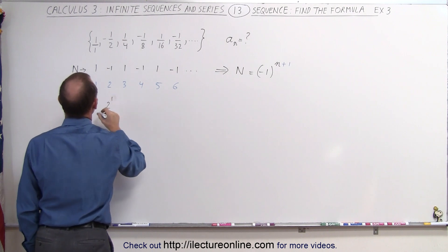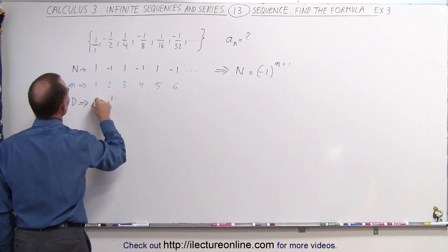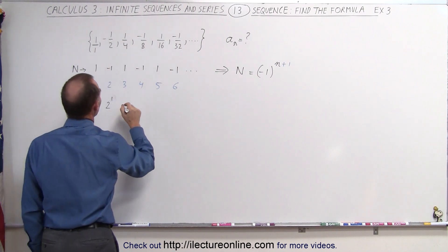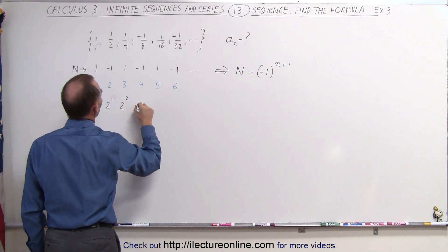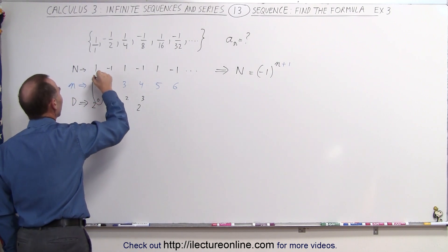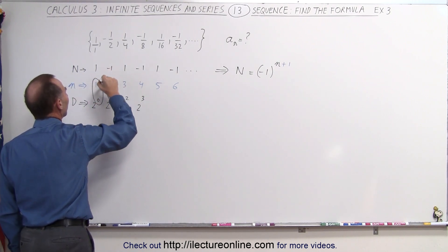That would be two to the first power. Notice that this would be two to the zero power, because two to the zero power gives us a one for the denominator. There's two to the second power, two to the third power. And again, notice that the exponent and n are offset by one.